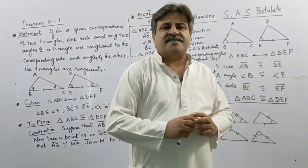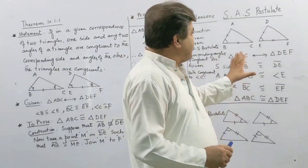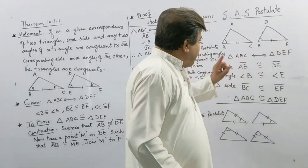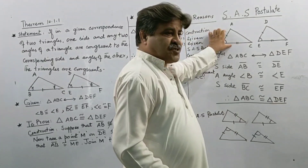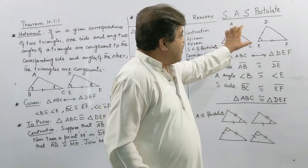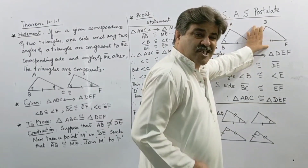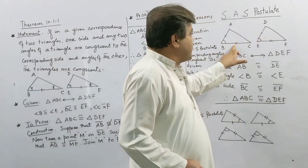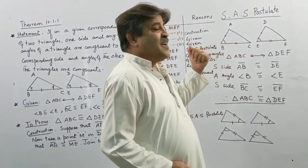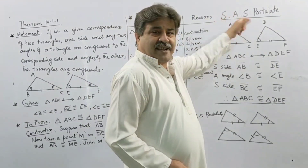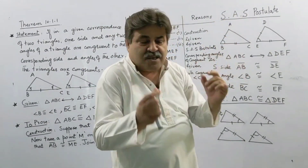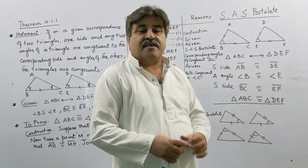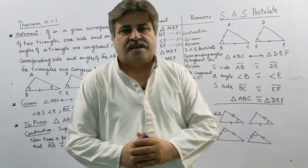What does the SAS postulate mean? It means that if two triangles are given and any two sides of the first triangle are congruent to the corresponding two sides — this side is congruent to this, this side is congruent to this — and the included angle, the angle in between the two sides, is also congruent, then the triangles must be congruent.